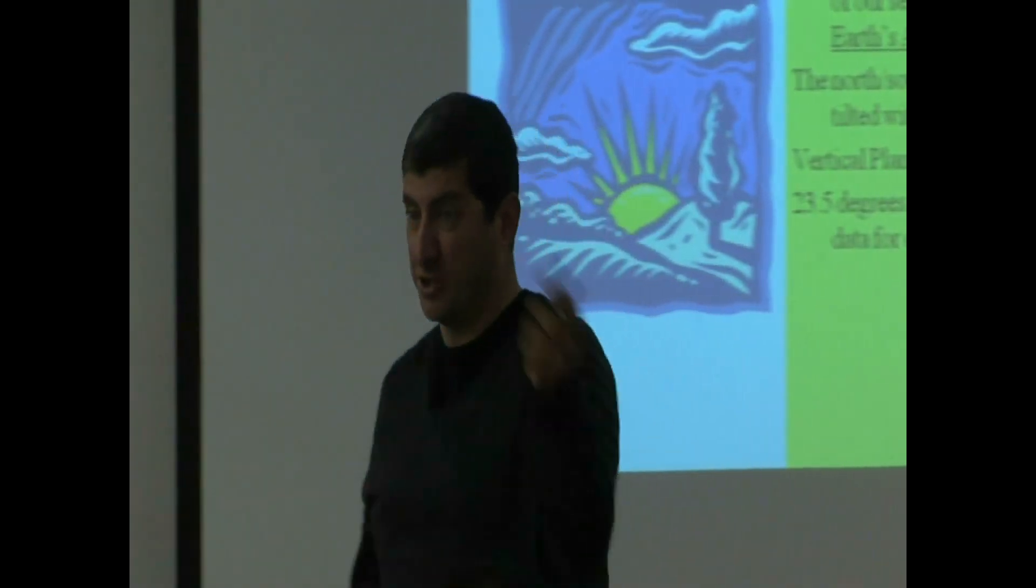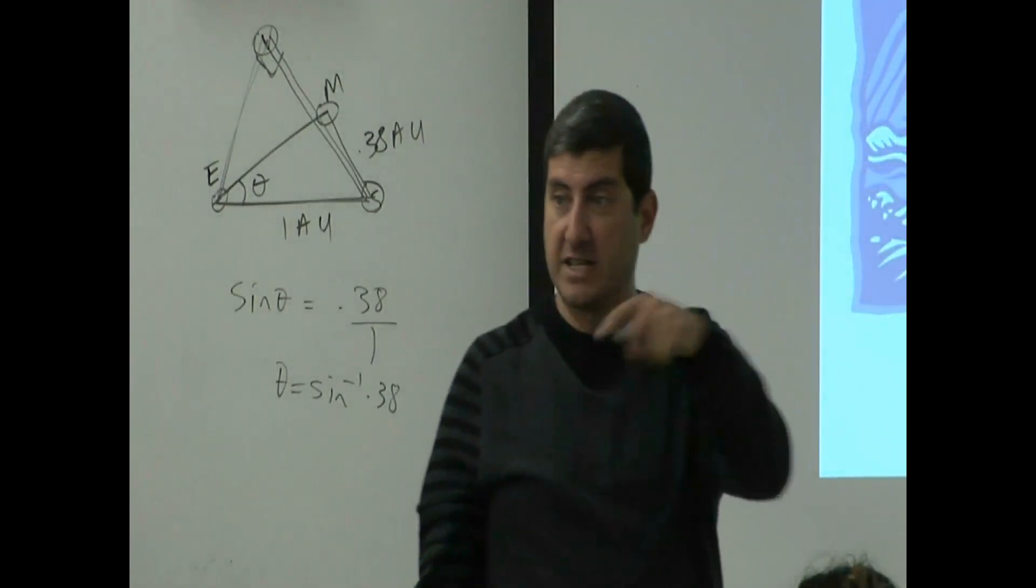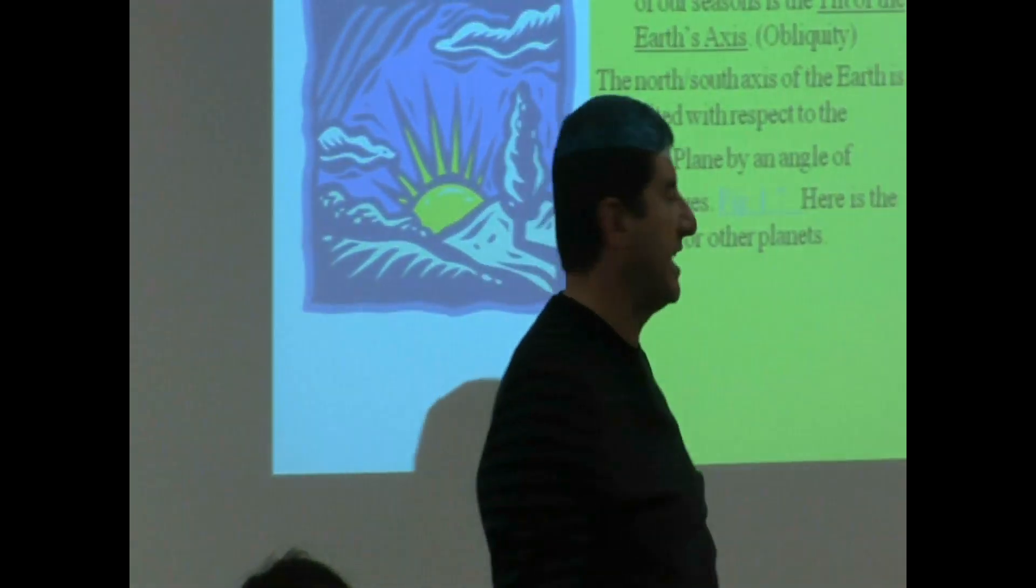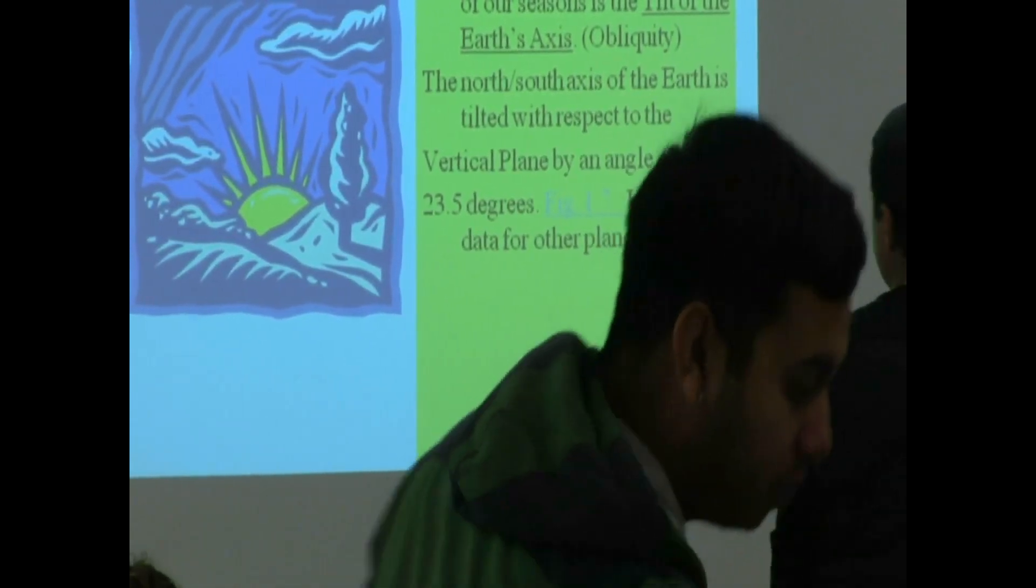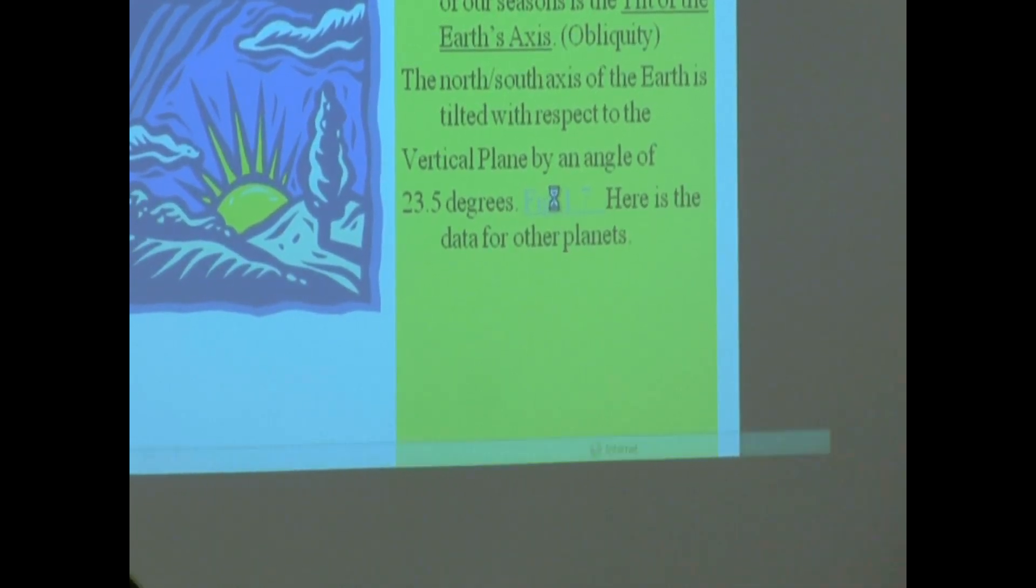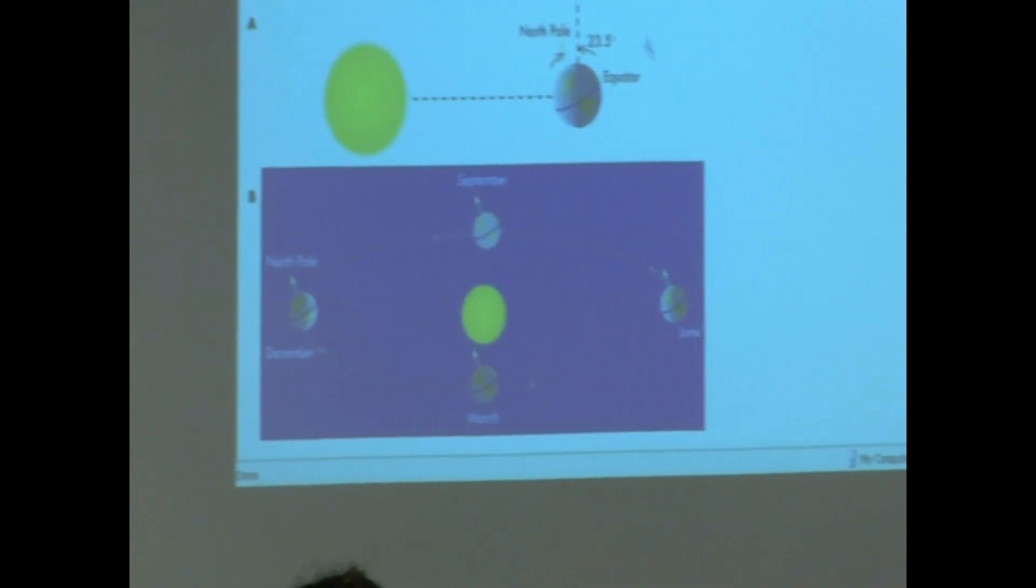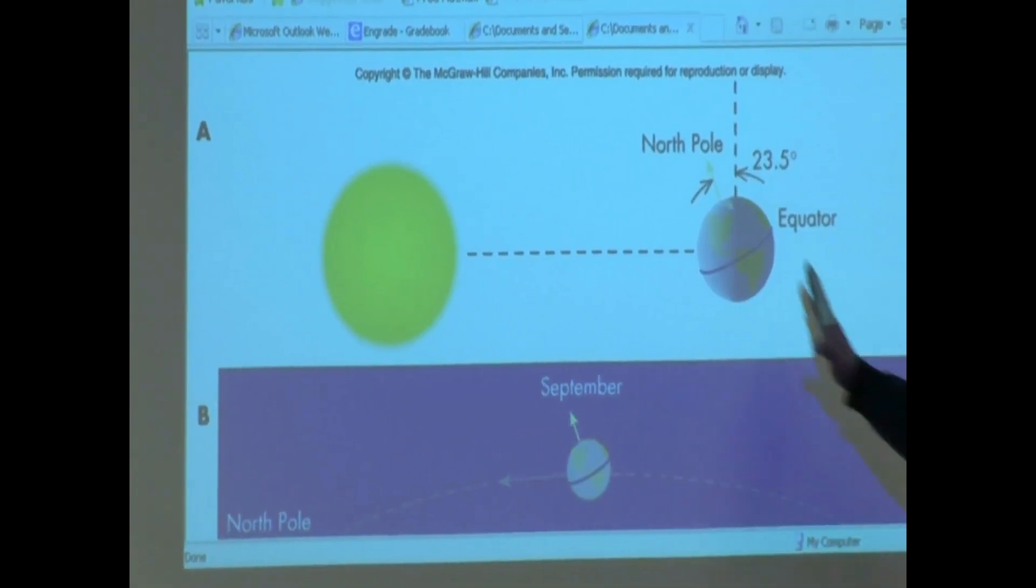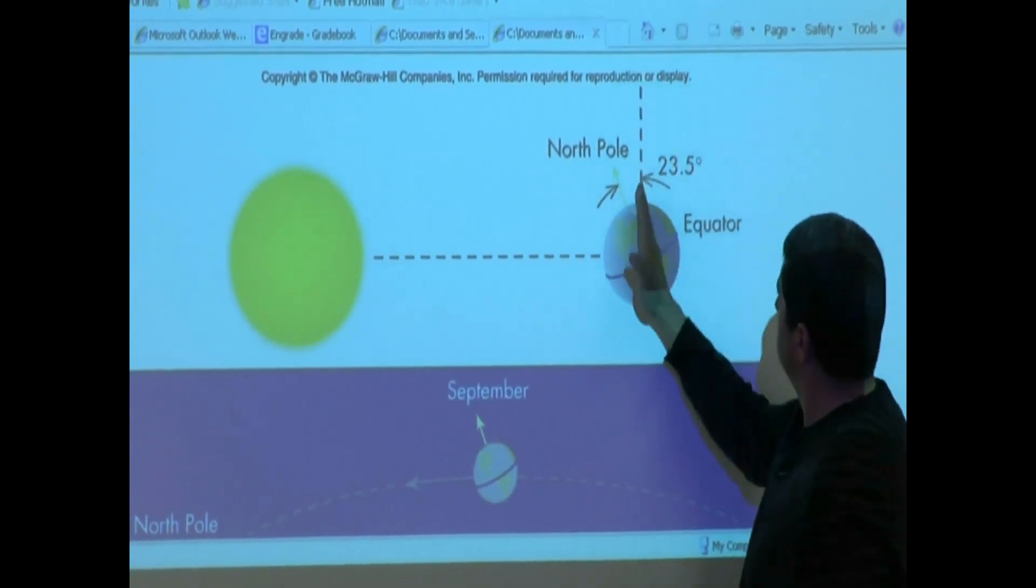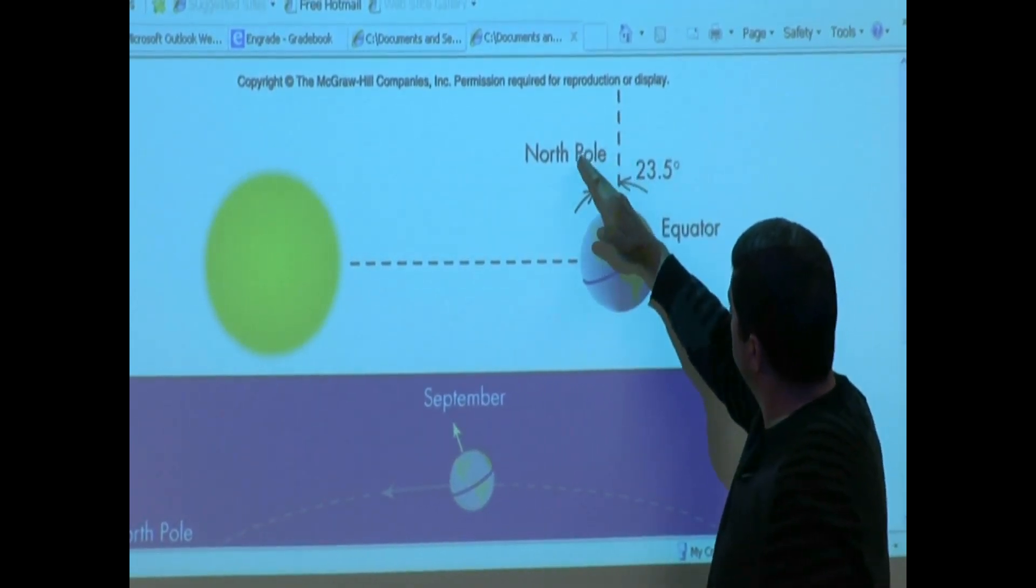We've actually talked about this before when we discussed the celestial sphere and the ecliptic. We mentioned that the Sun goes up 23.5 degrees, comes down 23.5 degrees. So we say the Earth's axis is tilted from the vertical plane by 23.5.